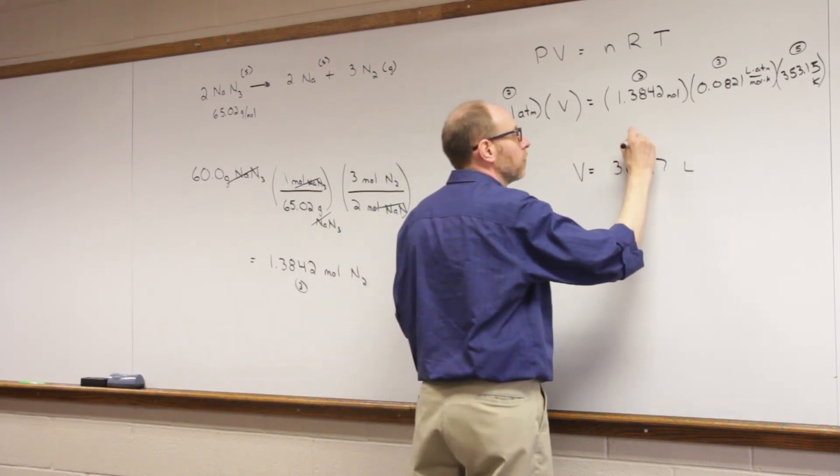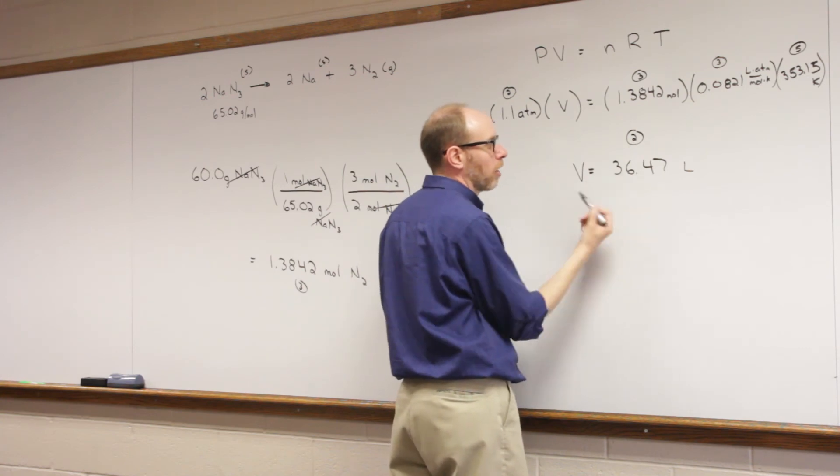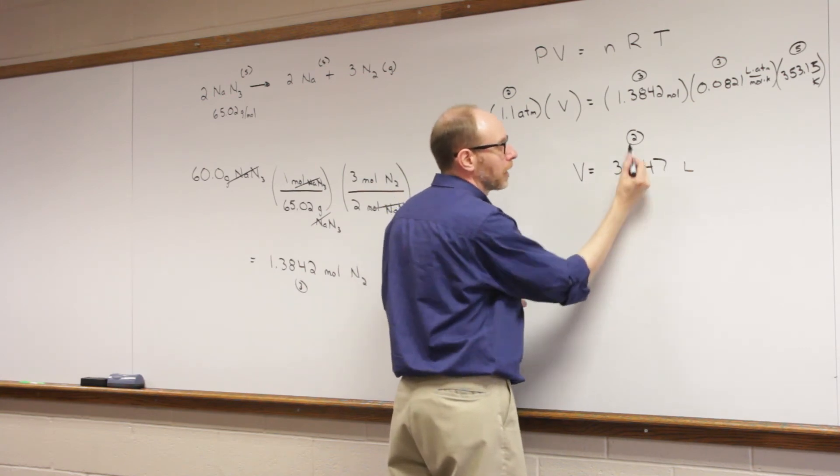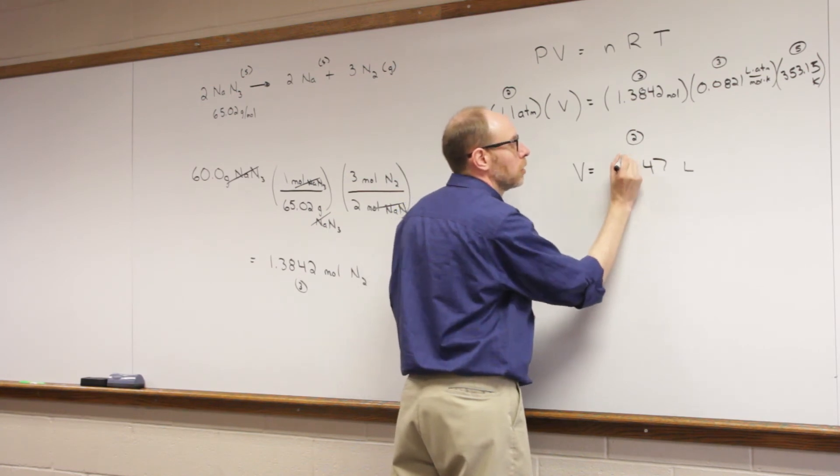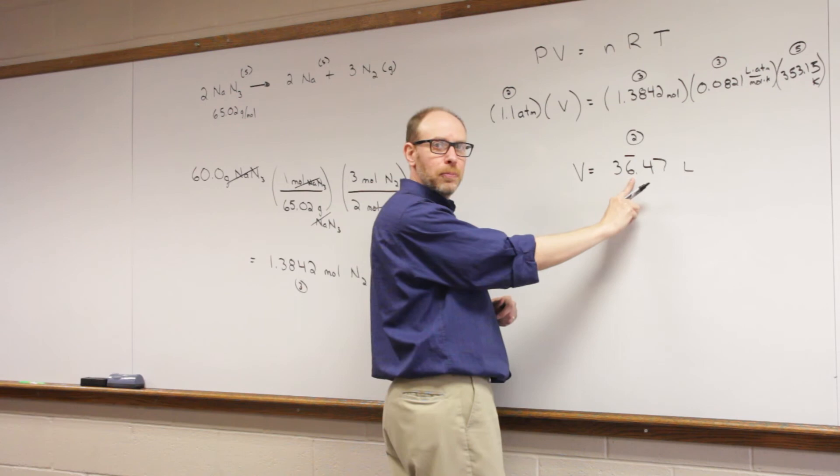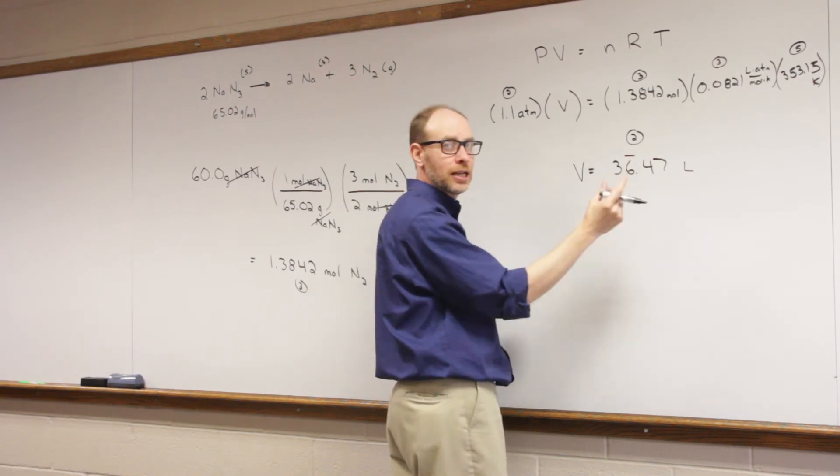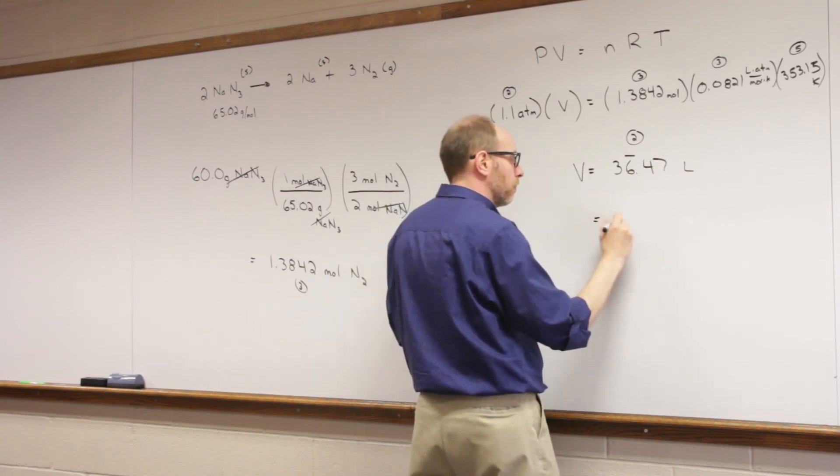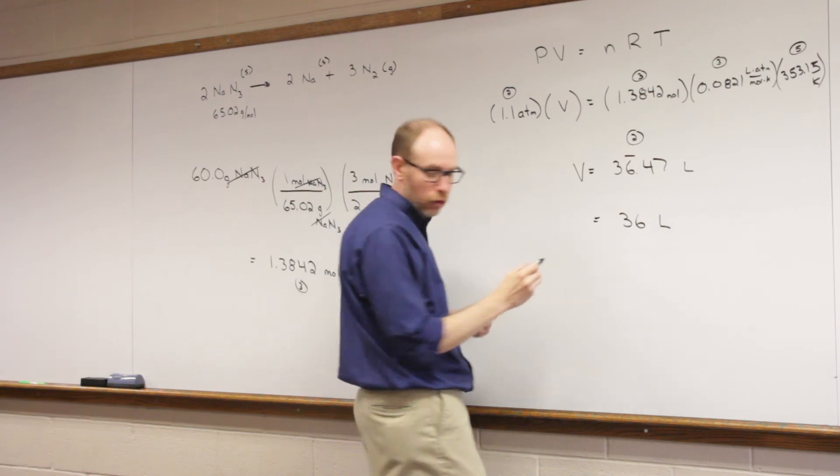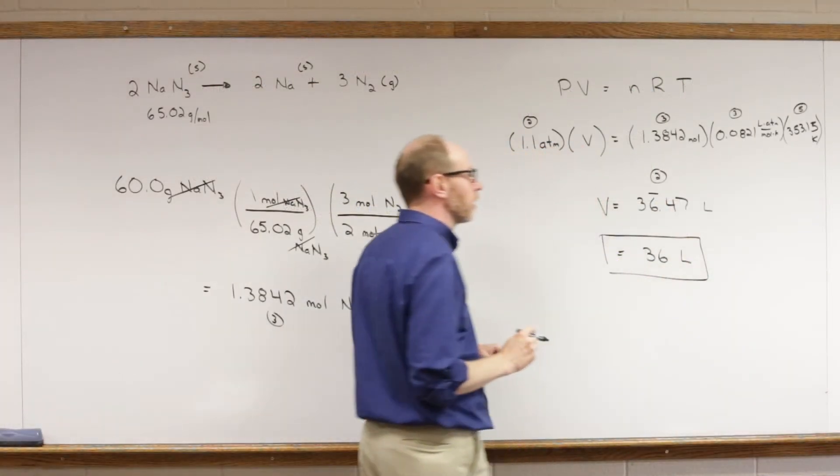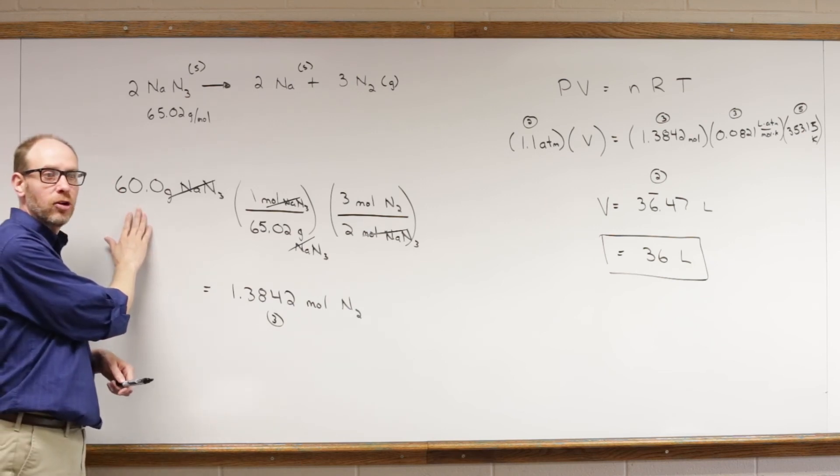It should have two significant figures. Just to refresh your memory, how do we figure out how to round this? Well, I'm going to count those two significant figures over from the left: one, two. I'm going to round to that six place, or to the one's place. I'm going to look at the number directly next to it. Less than five, and so I end up with 36 liters of nitrogen that come from decomposition of the 60 grams of sodium azide.